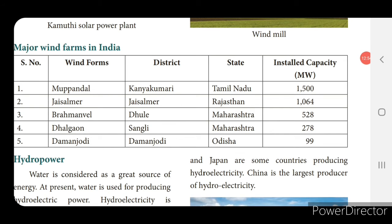In this table, major wind farms in India are listed with district, state and installed capacity. Mupandal in Kanyakumari, Tamil Nadu: 1,500 MW. Jaisalmer, Rajasthan: 1,064 MW. Brahmanwel in Jaisalmer, Maharashtra: 528 MW. Dalgun in Sangli, Maharashtra: 2,078 MW. Damanjodi in Odisha: 99 MW.